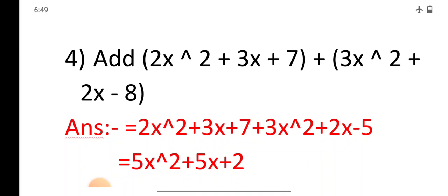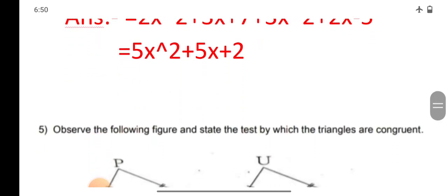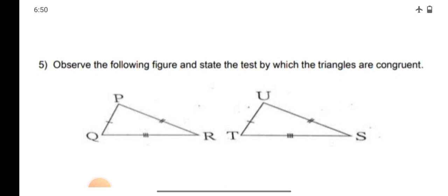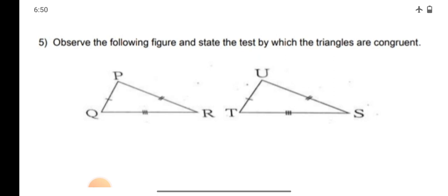Question number 4: Add 2x² + 3x + 7 and 3x² + 2x − 8. Question number 5: Observe the following figure and state the test by which the two triangles are congruent. There are two triangles PQR and UTS. The given information is that side PQ is congruent to side UT, side PR is congruent to side US, and side QR is congruent to side TS.